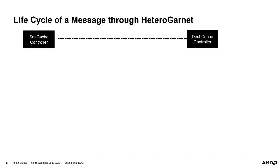To understand the underlying infrastructure of Garnet, let's briefly go through the life cycle of a message in the network. For example, let's assume that a cache controller is trying to send a message to another cache controller in the overall system. Note that the source and destination cache controllers could be either next to each other or far apart across different levels of heterogeneity. First, the cache controller injects the message into a message buffer dedicated to the type of message being sent. Each type of message — be it a GetS, GetM, or even a simple acknowledgement — is allocated a unique virtual network ID and a message buffer through the cache controller.